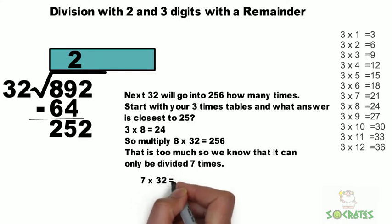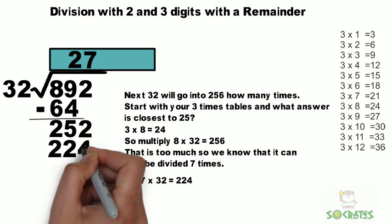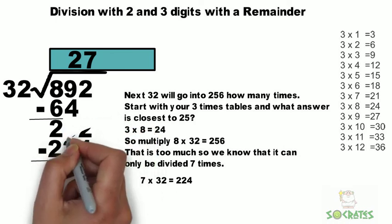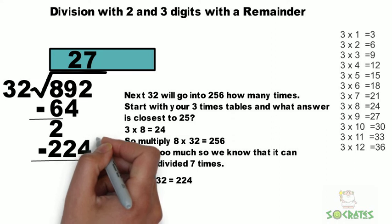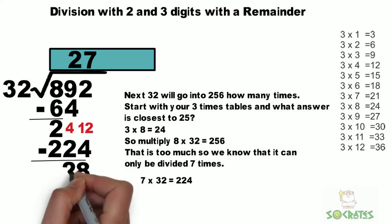7 times 32, well that's going to equal 224. We're going to subtract 224 from 252. So the 4, we can't take that away from 2. We need to borrow, so instead of a 5, it becomes a 4, and then a 12. 12 take away 4 is 8. 4 take away 2 is 2.